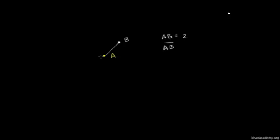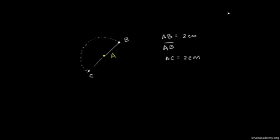Remember, this would refer to the actual line segment. But if I talk about its length, I would get rid of that line on top, and I would just say AB is equal to 2 centimeters. But I'm not curious just about B. I want to think about all the points — the set of all of the points that are exactly 2 centimeters away from A. So I could go 2 centimeters in the other direction, maybe get to point C. AC is also going to be equal to 2 centimeters. But I could go 2 centimeters in any direction, and if I find the set of all of the points that are exactly 2 centimeters away from A, I will get a very familiar looking shape.